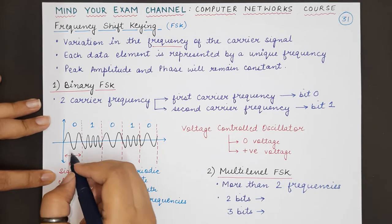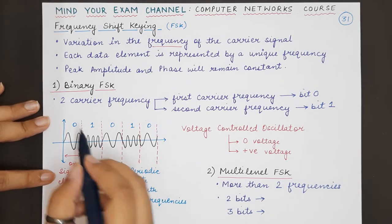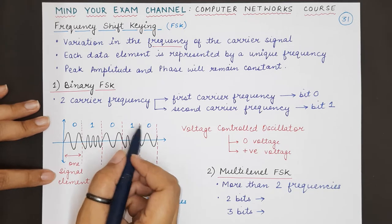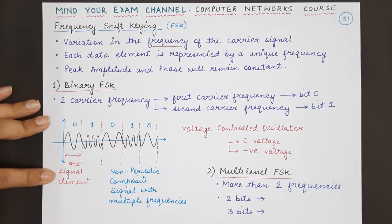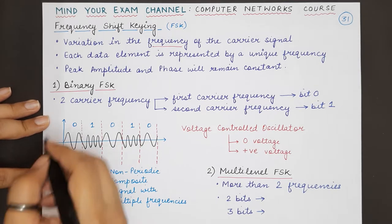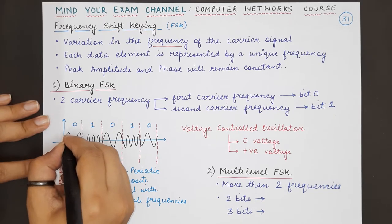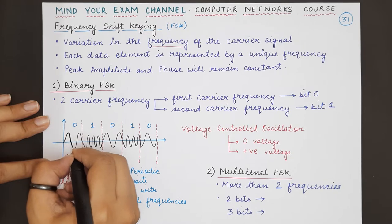Let's say we want to represent the data 0 1 0 1 0. For the duration of the first signal element 0, we will maintain one particular frequency of the carrier signal.